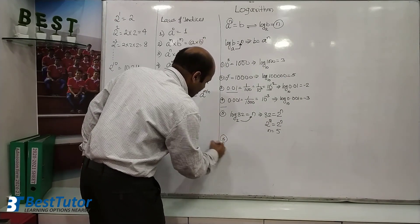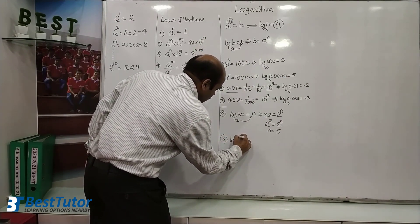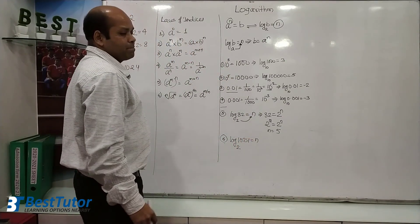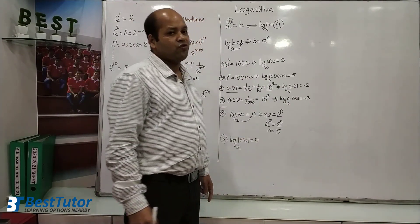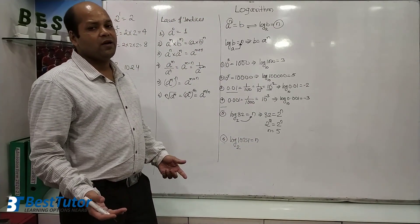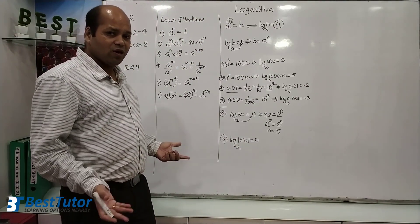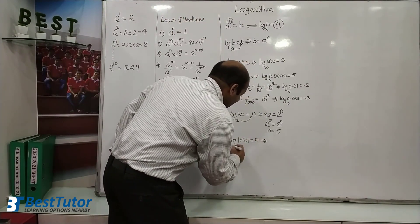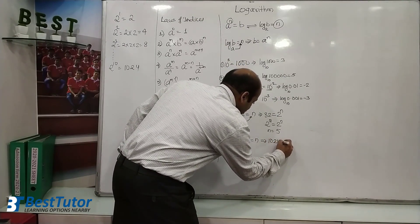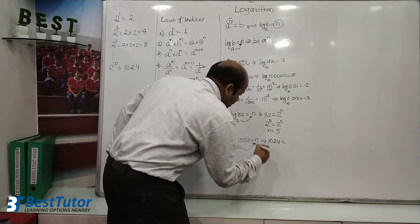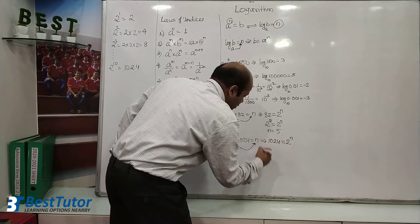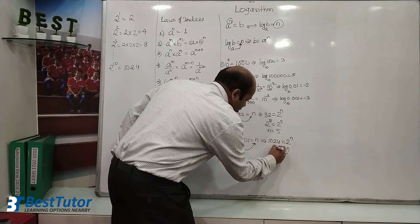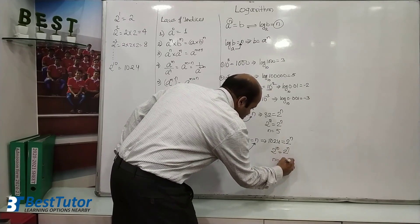Next: log of 1024 to the base 2 is equal to n. Push 2, and n goes on top: 1024 is equal to 2 raised to n. What is 1024? It is 2 raised to 10. So 2 raised to 10 is equal to 2 raised to n. Left side equals right side: n is equal to 10.